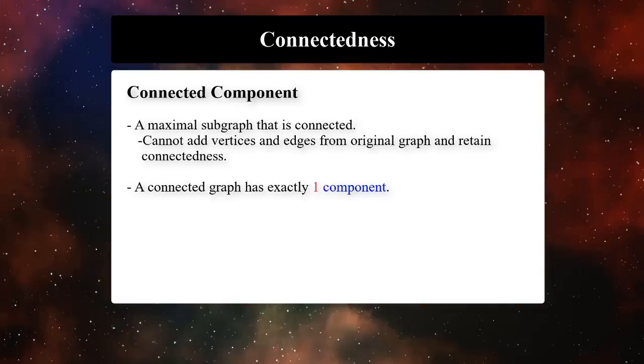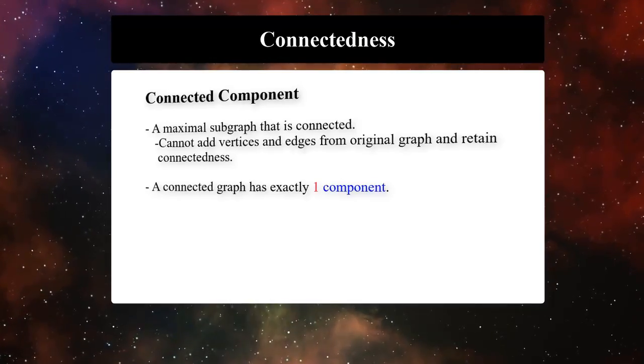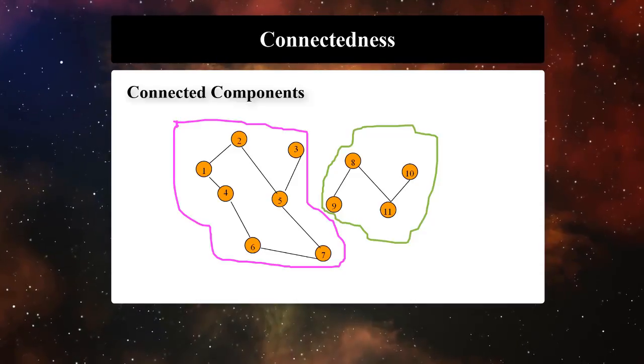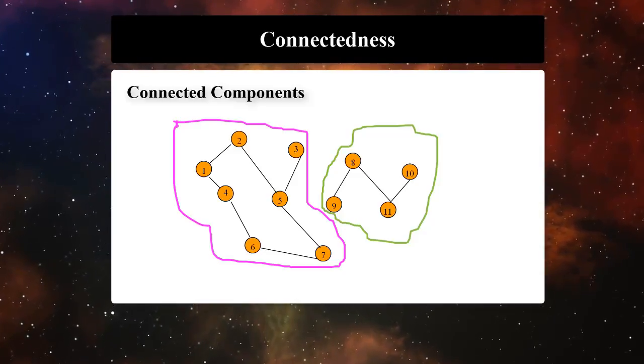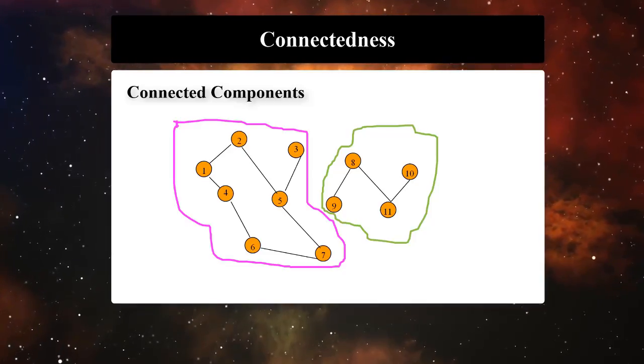It is clear that a connected graph has exactly one component. So let's look at one of the graphs we had before to see how many components it has. It has two connected components.